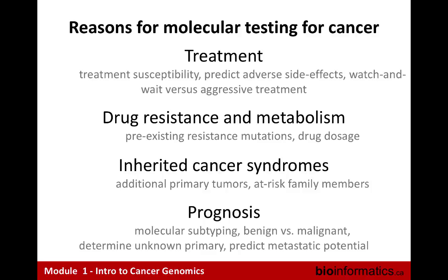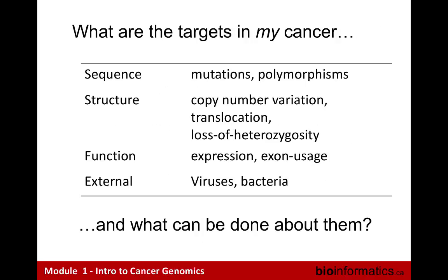Why do next-generation sequencing or molecular testing for cancer? Obviously for treatment — what are the genome alterations, what targeted therapies may work, are you already resistant to a drug, are there specific drugs you cannot metabolize? Also for hereditary cancer syndromes, where you're born with a loss-of-function mutation of a tumor suppressor and have a very high predisposition to cancer. And for prognosis — what type of cancer do you have? With increasing numbers of tumors sequenced, there are multiple molecular subtypes even within breast, lung, and brain cancer, some doing better clinically than others. I'll pause here if anyone has questions about the cancer genomics overview before diving into the single-patient analysis.